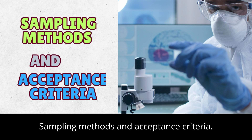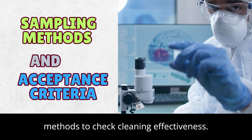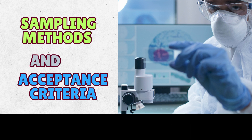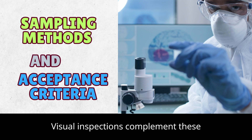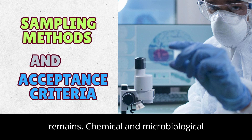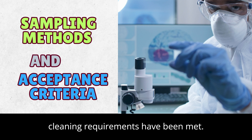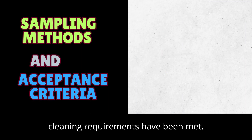Sampling Methods and Acceptance Criteria. Swab and rinse sampling are common methods used to check cleaning effectiveness. Visual inspections complement these tests, ensuring no visible residue remains. Chemical and microbiological testing follows to verify that all cleaning requirements have been met.